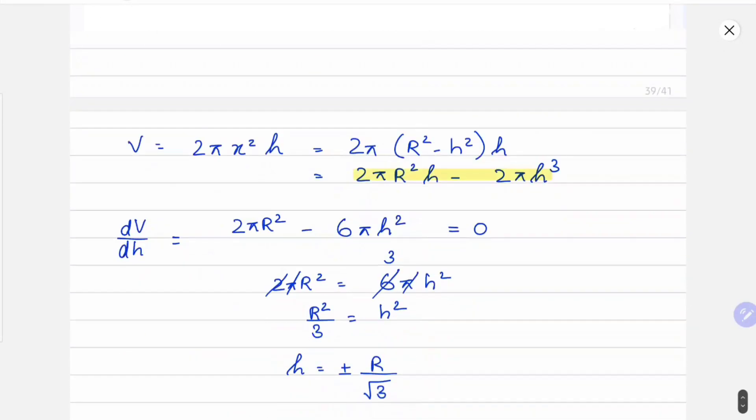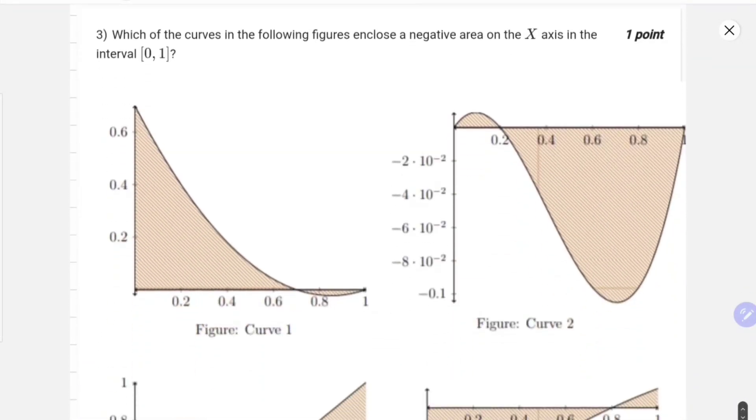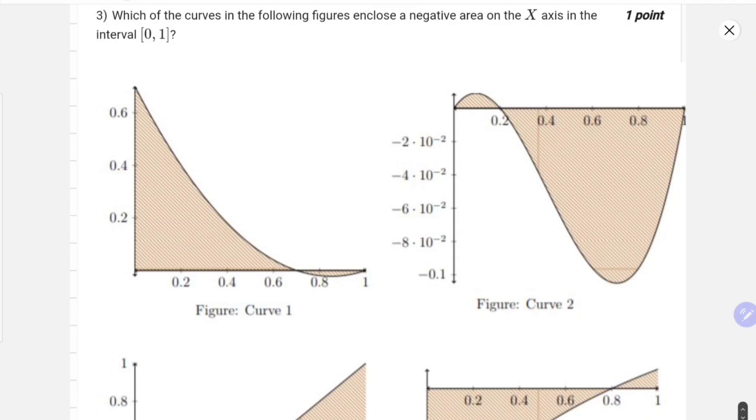With this, let's move to the next question, question number three. This one is quite easy to do. You can directly see the graph and tell the answer. The question is which of the curves in the following figure enclose a negative area on the x-axis in interval 0 to 1. The important thing is to note the interval 0 to 1. So let's just mark the area.